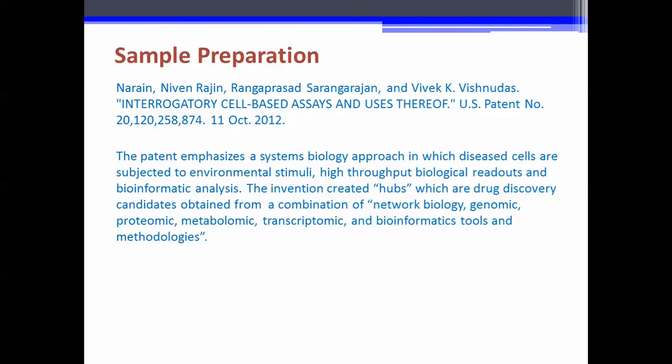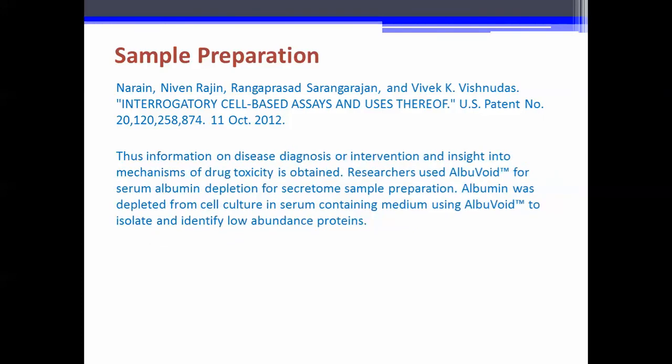The invention created hubs which are drug discovery candidates obtained from a combination of network biology, genomic, proteomic, metabolomic, transcriptomic, and bioinformatic tools and methodologies. Thus, information on disease diagnosis or intervention and insight into mechanisms of drug toxicities were obtained. Researchers used Albuvoid for serum albumin depletion for secretome sample preparation.